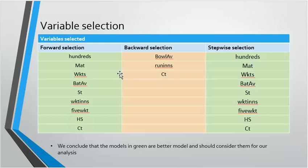We then consider all the variables to check if we have the best model so far. We apply a variable selection method using forward selection, backward selection and stepwise selection. Checking all three types of selection, we see that we need to include more variables in our model. Forward selection and stepwise selection give the same results. The models highlighted in green are better models and we should consider them for our analysis.